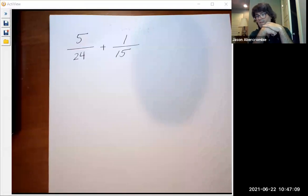I'm noticing that the bottoms are pretty large numbers, 24 and 15, and that's okay. That's not a bad thing. But if you multiply 24 times 15, you are going to get a large common denominator.